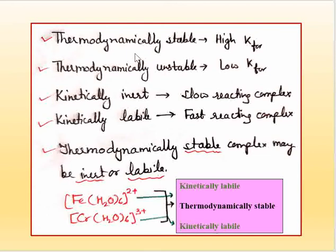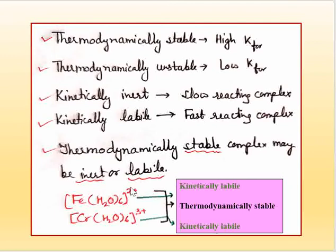To summarize: thermodynamically stable means high formation constant (Kf); thermodynamically unstable means low formation constant. Kinetically inert means slow-reacting species, and kinetically labile means fast-reacting species.